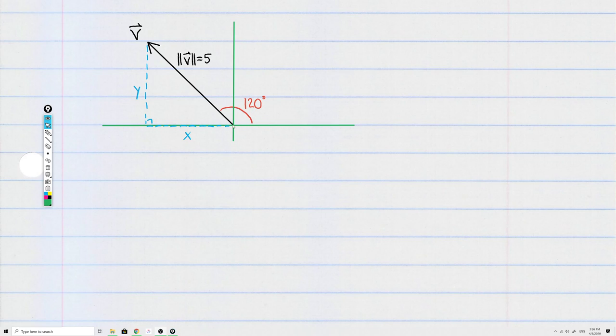So we draw angles for vectors the same way that you do on the unit circle starting from the positive x-axis. And what we would like to do here is find component form of the vector. We want to find x and we want to find y.